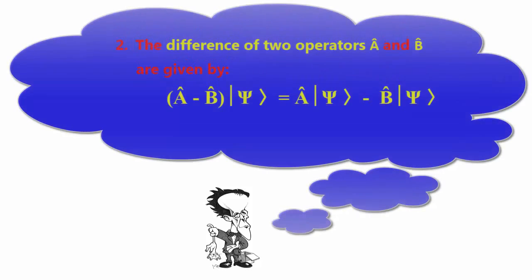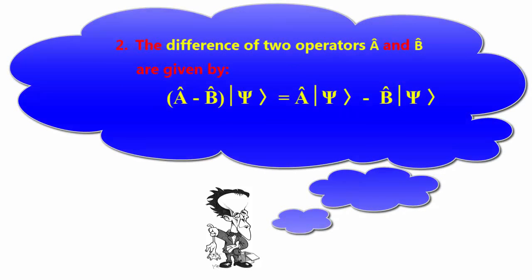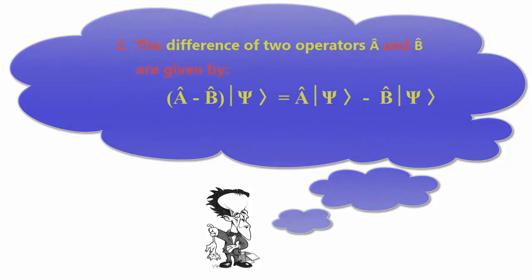2. The difference of two operators A and B are given by (A - B)|ψ⟩ = A|ψ⟩ - B|ψ⟩.